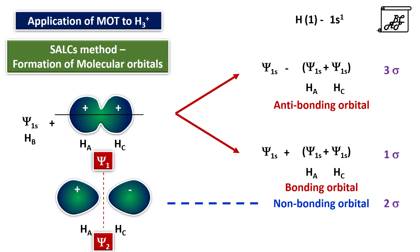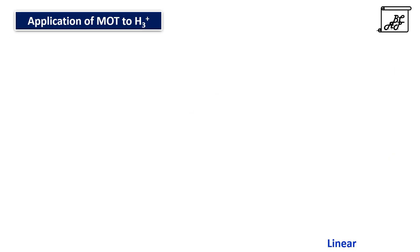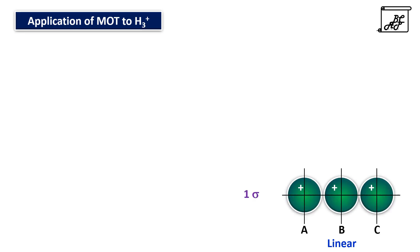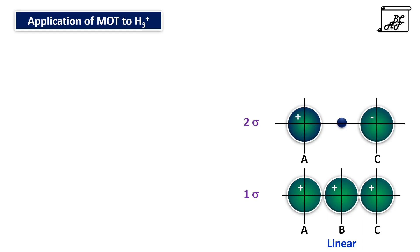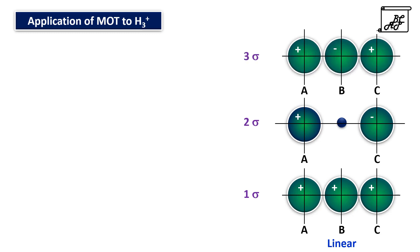Now we will consider the linear arrangement of the molecular orbitals. According to this, the three atomic orbitals will be arranged in linear fashion in case of 1 sigma, which is a bonding molecular orbital. Then second will be the non-bonding molecular orbital, psi 2. And third will be 3 sigma, the anti-bonding molecular orbital.